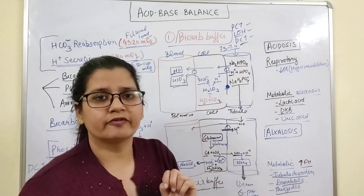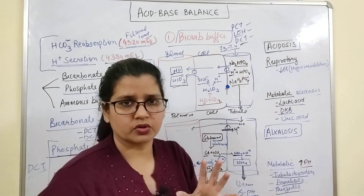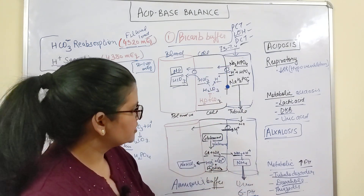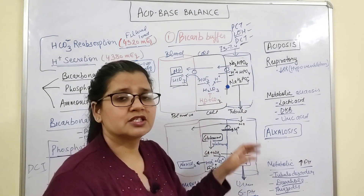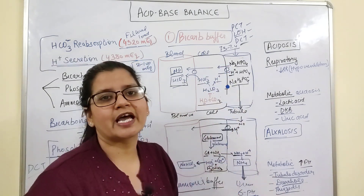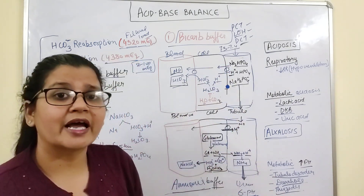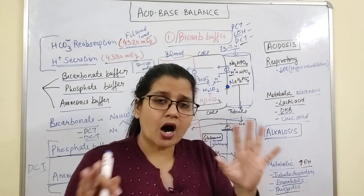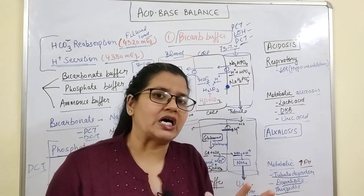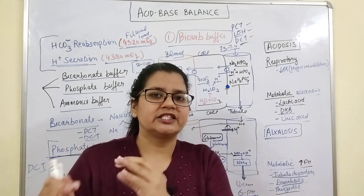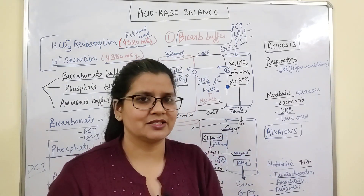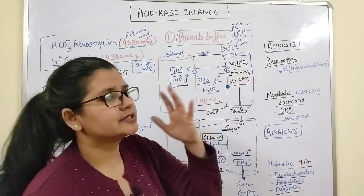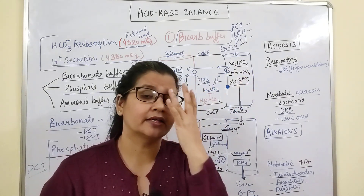The pH of plasma filtering into the Bowman's capsule is around 7.3 to 7.4, but urine pH is 6. This is because of the acids being excreted via these three buffer systems. That is how you answer the acid-base balance of the kidney.